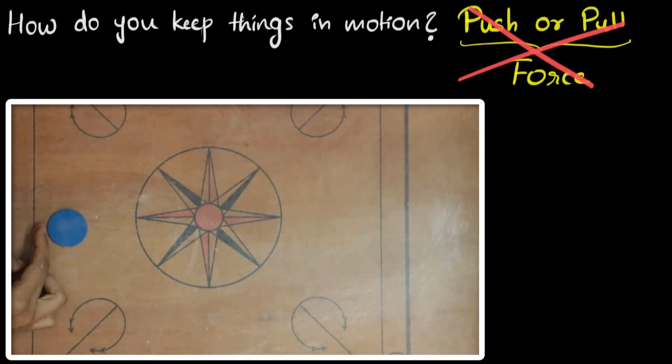So if we come back to our board, according to Galileo, when I strike this coin, it is friction that is opposing the motion and stopping it.